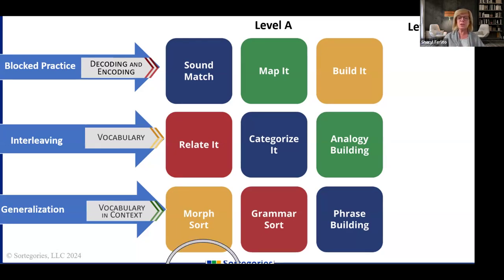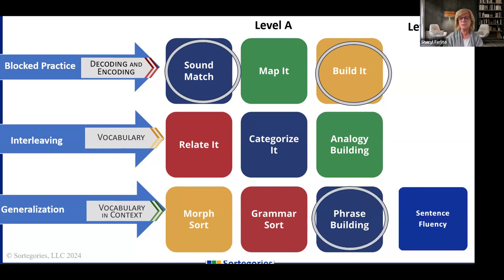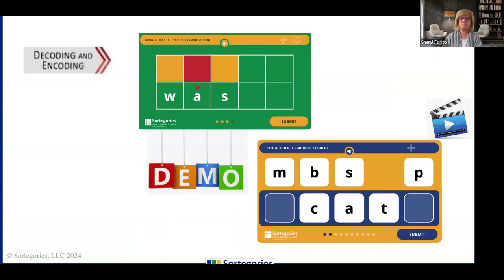In level B, we change things up a little bit. Sound Match advances to what sounds are the same in a word. Build It advances to building words in syllables, not just individual sounds. And Phrase Building grows up to sentence fluency. We're going to show you examples of all three of those things. Let's start with a demonstration of Map-It.